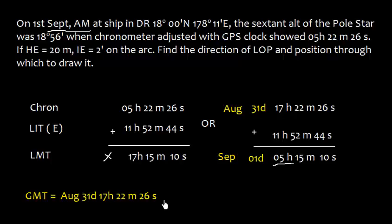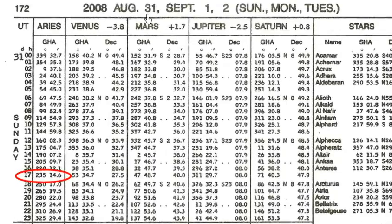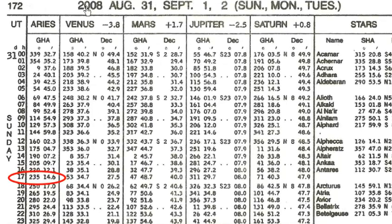Now with this GMT time, I need to find GHA of Aries. So GHA Aries for 31st August and 17 hours, I need to look in the almanac. And here is the almanac, this is for 2008. This is August 31st, so 31st August, here this is the UT time which is the GMT. Here 17 hours, 31 and 17, and in the column of Aries, here I see 235° 14.6'.